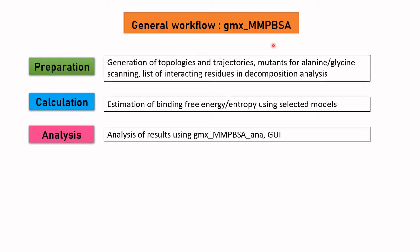The general workflow of the MMPBSA program has three steps: preparation, calculation, and analysis. In the preparation stage, it involves generation of topologies and trajectories, different mutants for alanine and glycine scanning, and in decomposition analysis, it requires generation of the list of interacting residues. In the calculation stage, the binding free energy or entropy is estimated using the selected model system. In the analysis stage, results can be analyzed using the graphical user interface, mmpbsa_ana.